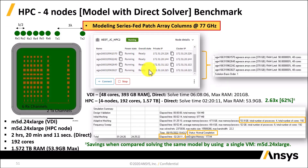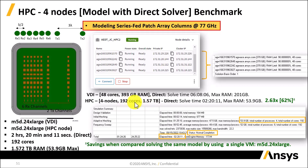This is the comparison of the results. The model, by using a single virtual machine with 48 cores, was solved in 6 hours and 8 minutes, with a maximum RAM of 201 gigabytes. The model solved by using four nodes with the same virtual machine — 192 cores — was solved in 2 hours and 20 minutes, which is almost three times faster: 62% savings in time. This was the demonstration of how to use HPC and HPC cluster by using ANSYS Gateway powered by AWS. Thank you for listening.